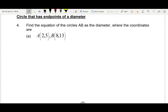I will explain how to get the equation of the circle that has the endpoints of a diameter. Example 4, find the equation of the circle AB as the diameter where the coordinates are point A (2, 5) and point B (8, 13).